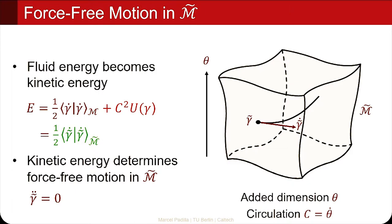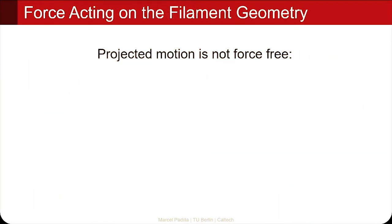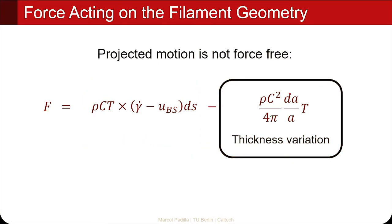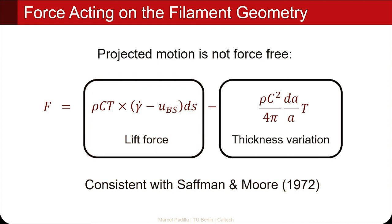By choosing this new scalar product, we have introduced new effects into the dynamics. If we spell out this equation of motion by projecting it back into the space of all filament geometries, we observe that the filament actually experiences an effective force. What is very surprising is that we can understand these effective forces physically: they come in two parts. One is the lift, related to the Kutta-Joukowski lift force that keeps airplanes in the air. The other force term comes as an additional pressure effect from the varying thickness along the filament.